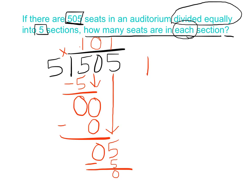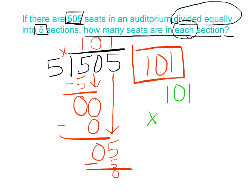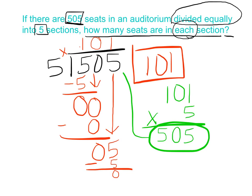I have 101 for my quotient. Now if I want to be a good math student, what am I going to do? That's right — I'm going to multiply to check. 101 times 5: 5 times 1 is 5, 5 times 0 is 0, 5 times 1 is 5. And my product, 505, equals my dividend of 505. So my quotient is correct.